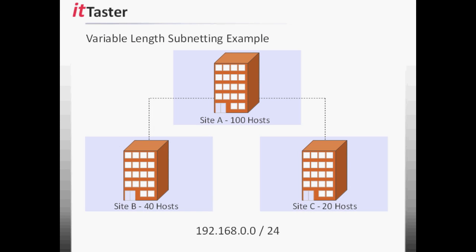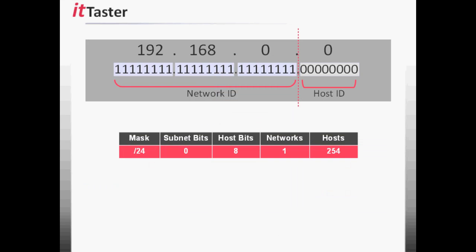In this example we have three sites. Site A requires 100 host addresses, Site B requires 40 host addresses, and Site C requires 20 host addresses. I'm going to work with the network 192.168.0.0/24 again to keep things simple. This network gives us 254 valid hosts to work with after allowing for the network address and broadcast address. So we begin with the largest address requirement first: 100 hosts for Site A.